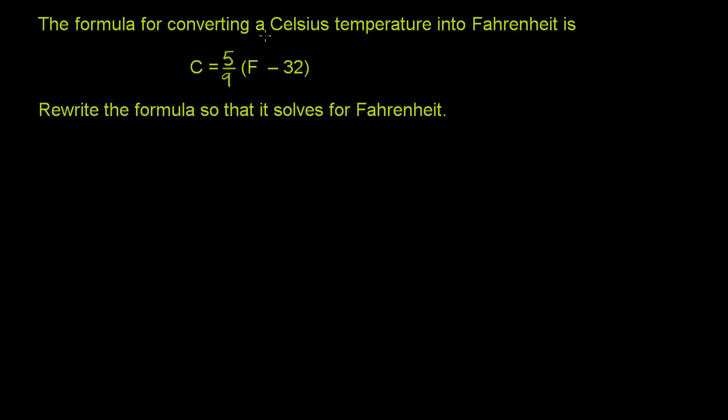We're told that the formula for converting a Celsius temperature into Fahrenheit is the Celsius temperature, or C, is equal to 5 ninths times the Fahrenheit temperature minus 32. Rewrite the formula so it solves for Fahrenheit.